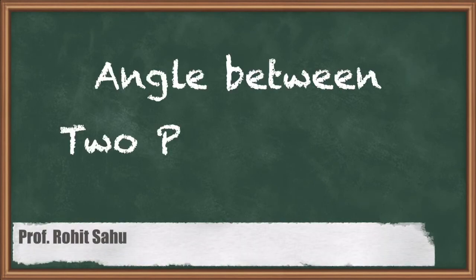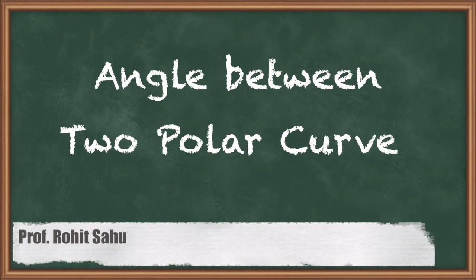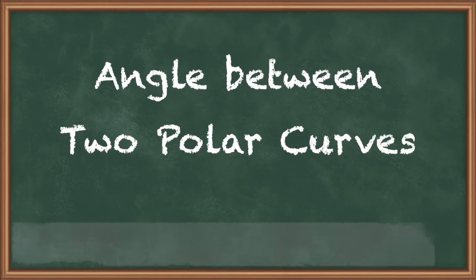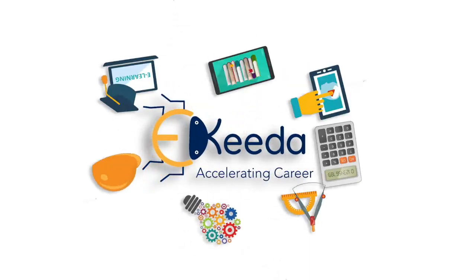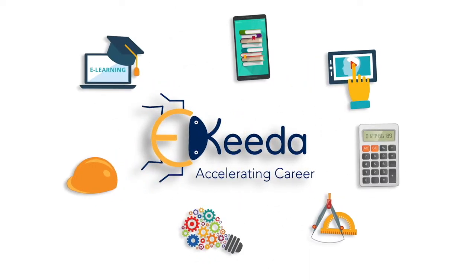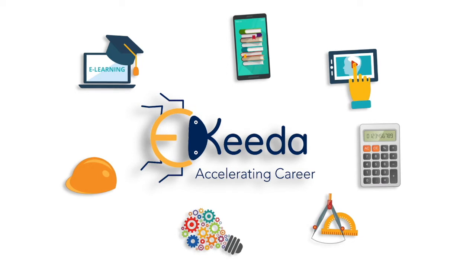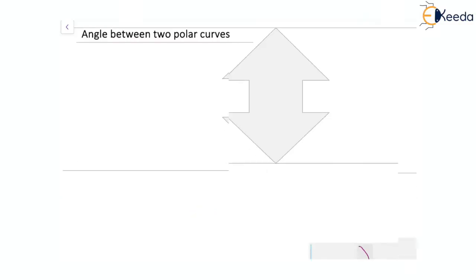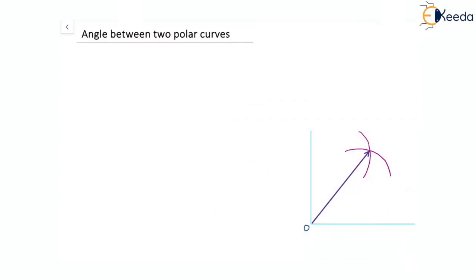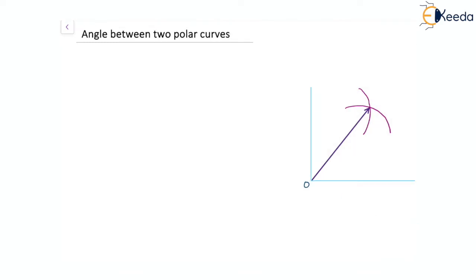Hello, in this session we'll talk about angle between two curves. In our polar coordinate system, we have two curves which will intersect at some point. Let's say that point is P.